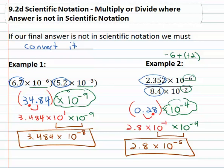So as we're multiplying and dividing with scientific notations, multiplying the numbers using exponent properties on the tens, if our final result is not in scientific notation, we must convert it to the correct form.